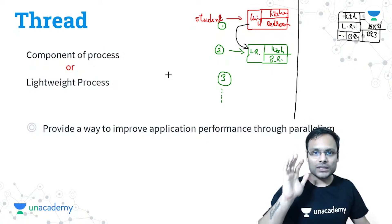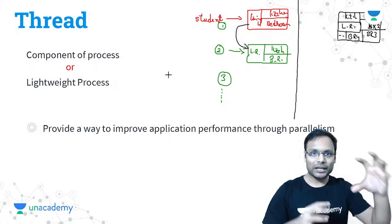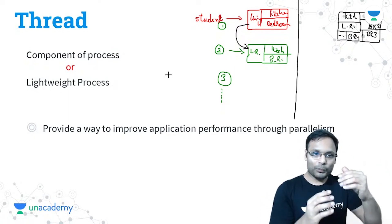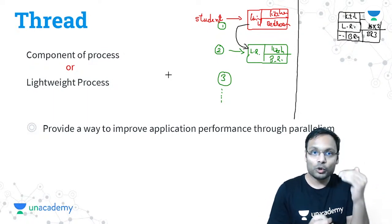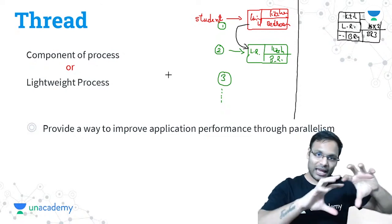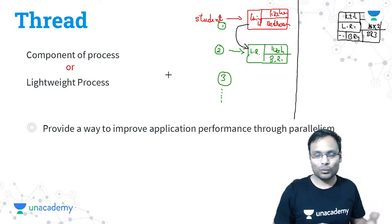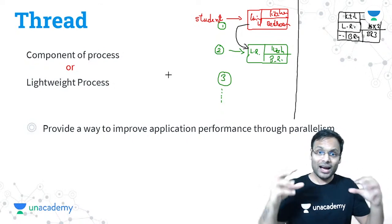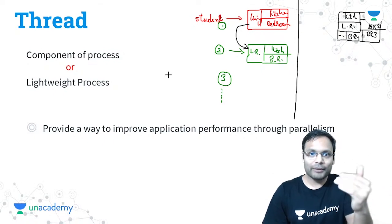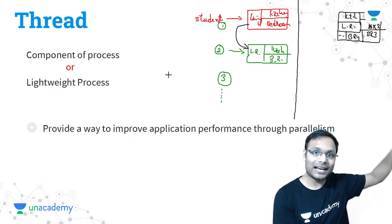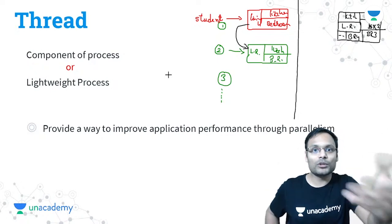Suppose there is a process — a student is a process. That process is doing some work. Suppose my requirement is to perform the same operation twice — two instances — because for two different sets of data I need to perform the same operation. It's like a web request: when you send a request, there is a listener process at Google's server that listens to your request.